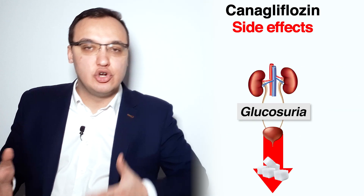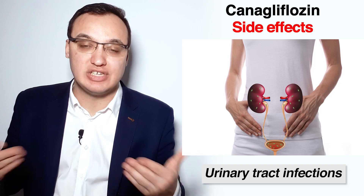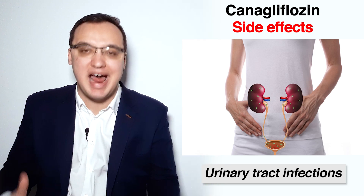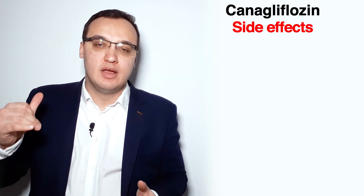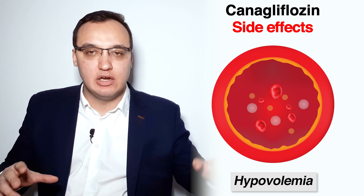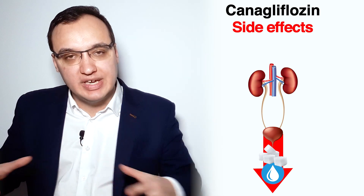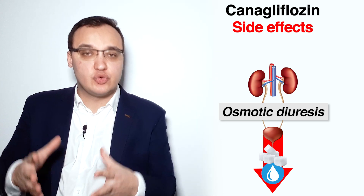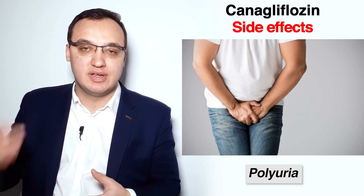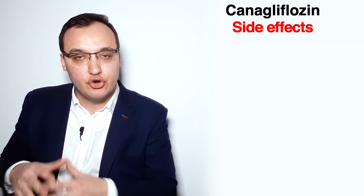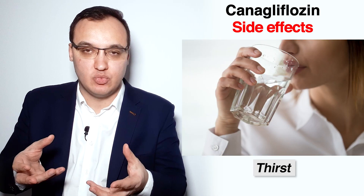Because of increased glucosuria, urinary tract infections can happen, as bacteria thrive on glucose. Another side effect is hypovolemia and hypotension, since not only glucose but also water is secreted due to osmotic diuresis. This leads to polyuria — increased urination — causing loss of water and lower blood pressure. The body's natural response is increased thirst, but elderly patients often do not drink enough water to compensate.